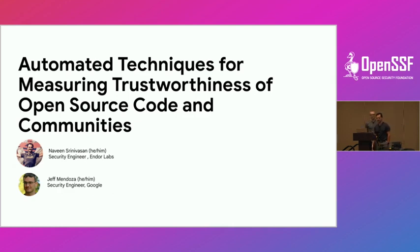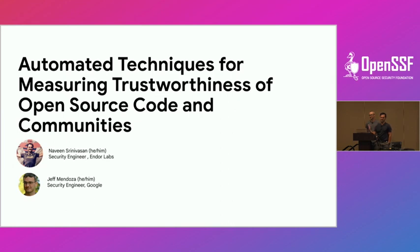As Crow and Jeff mentioned, I'm not Stephen. I'm taking over for Stephen, who couldn't make it because of flight delays. I'm going to try my best to cover things, and this is last-minute — I prepared for this talk last hour. I'm Naveen Srinivasan. I'm one of the maintainers of the Scorecard Security Project, and I work for EndoLabs, which is a supply chain security startup.